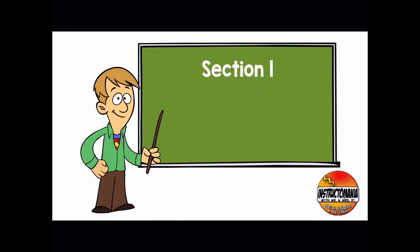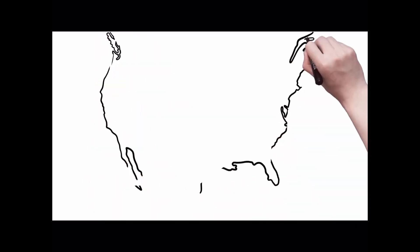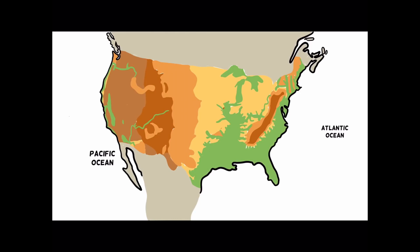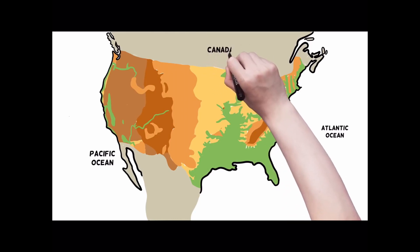Section 1: The Geographic Features of the United States. The mainland of the United States sits in the Northern Hemisphere, entirely in the continent of North America. The U.S. is flanked on the east by the Atlantic Ocean and on the west by the Pacific Ocean. The United States shares a northern border with Canada. Mexico lies to the south of the United States.